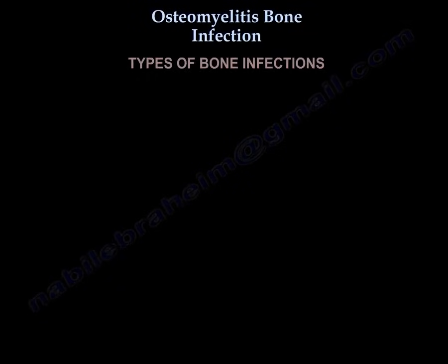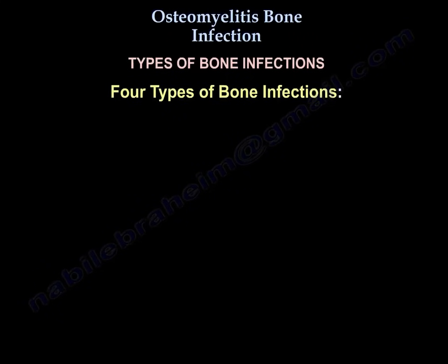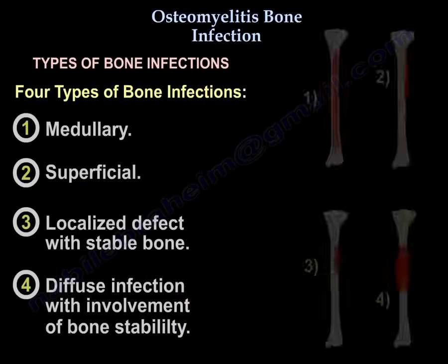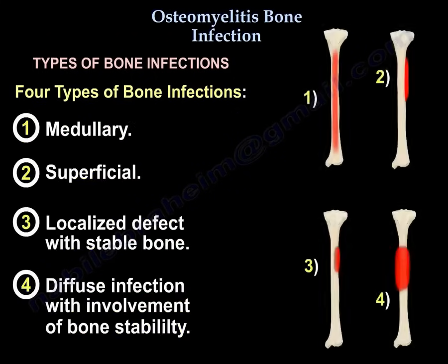There are four types of bone infections: type one is medullary, type two is superficial, type three is a localized defect with stable bone, and type four is diffuse infection with involvement of bone stability.